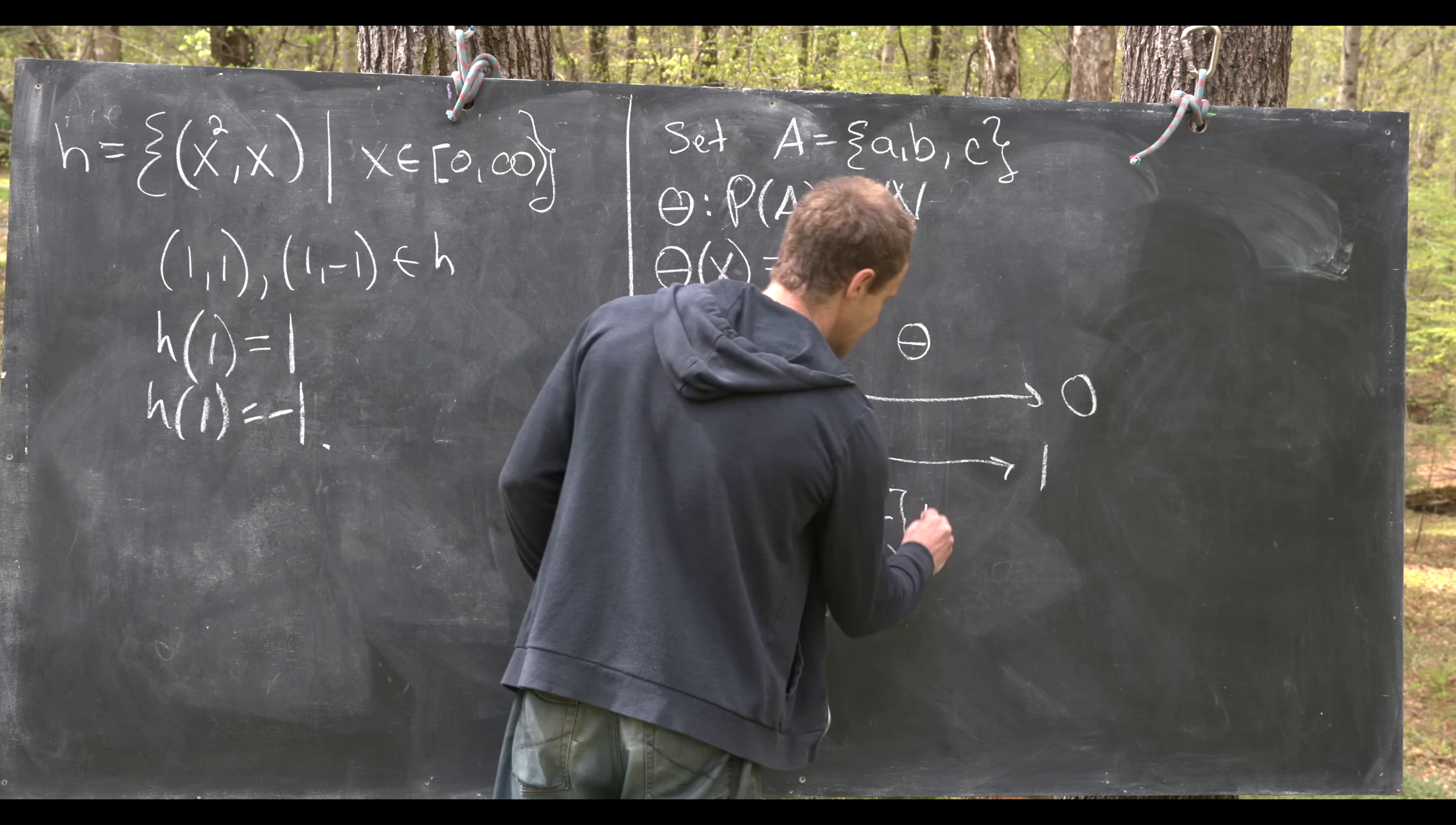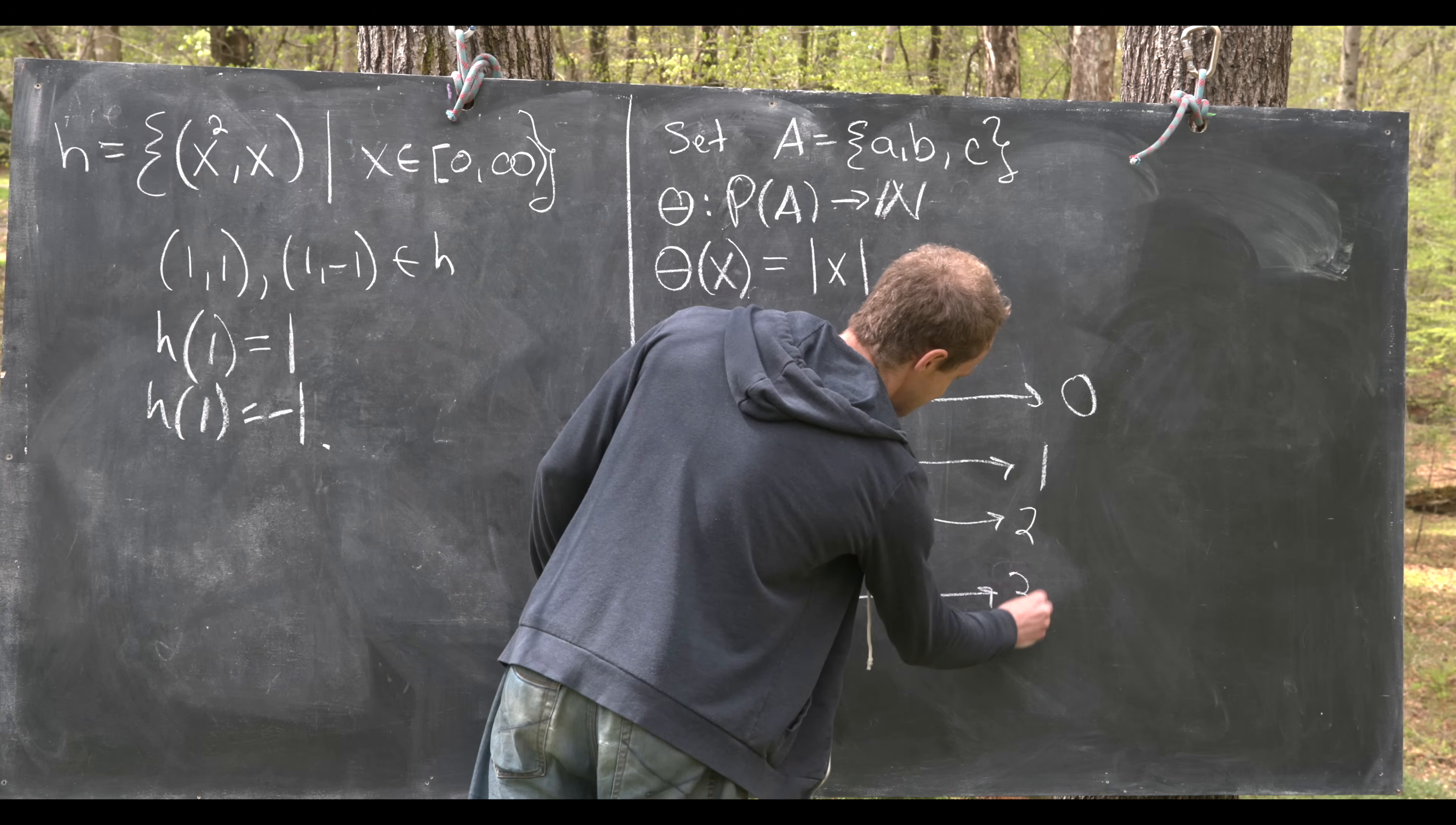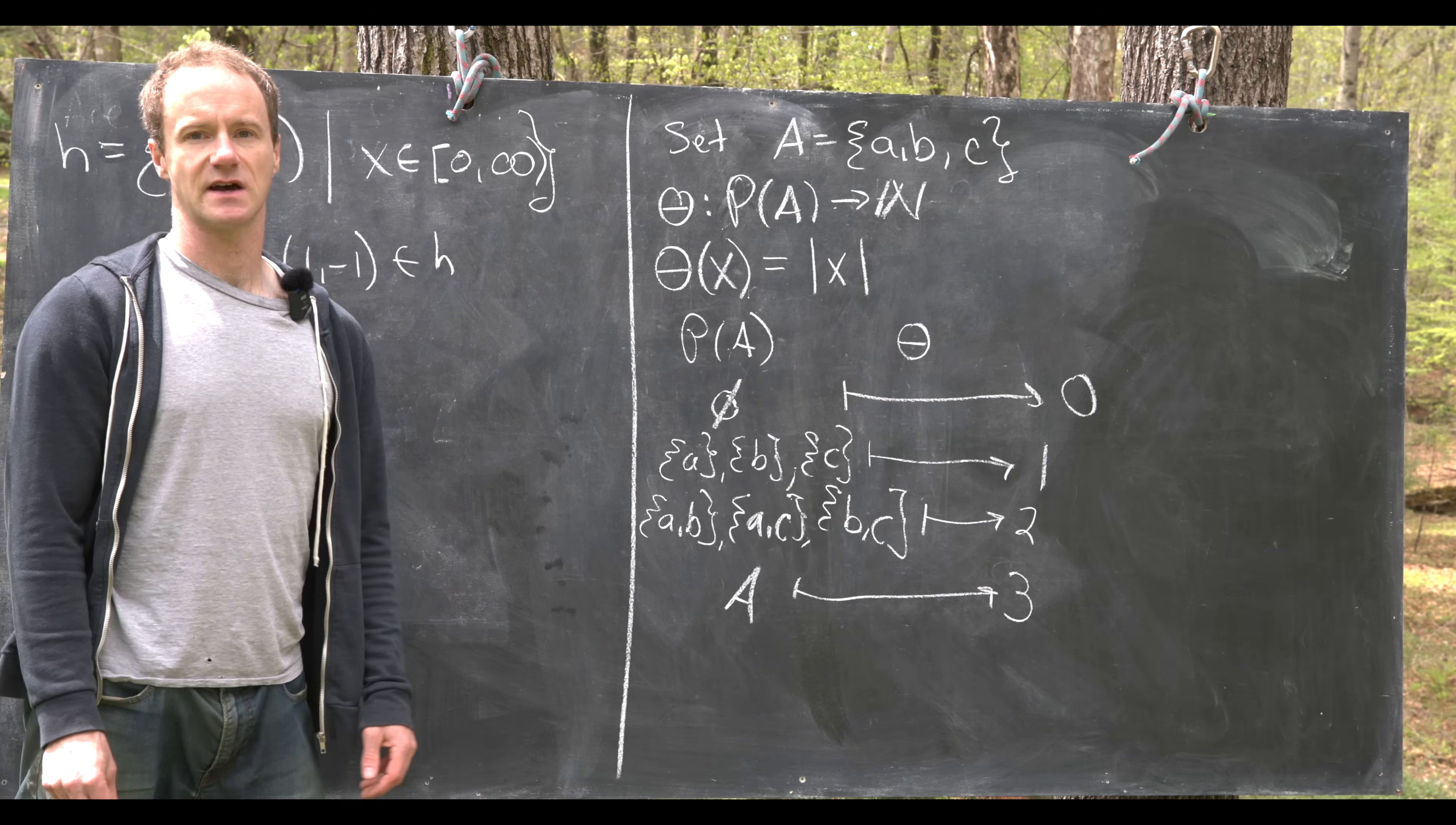And then it takes each of these doubletons to two because they have two elements. And then it takes the set itself to three because it has three elements. And that's a good place to stop.